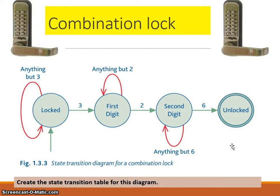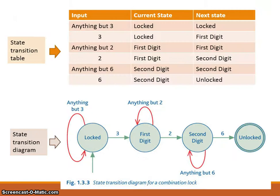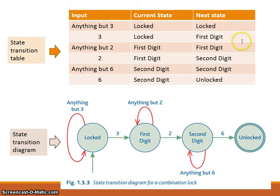Pause the video and create a state transition table for this diagram. Here is the state transition table — you might want to check that against what you produced. It shows the input, the current state, and the next state. So if we were in the locked state and provided the number 3, we went to first digit correct. If in the locked state and provided anything but 3, we stayed in locked.